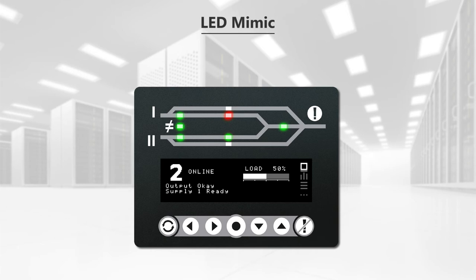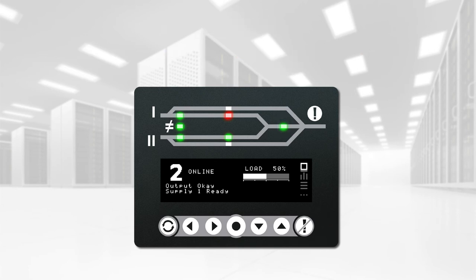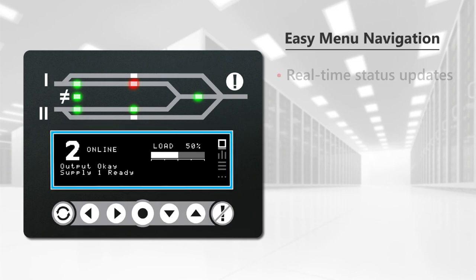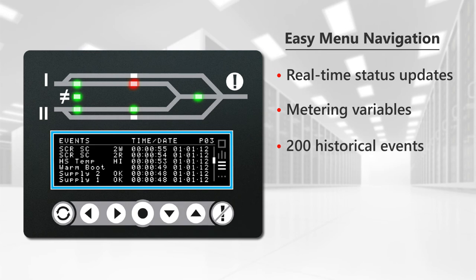The bi-colour LED mimic clearly indicates the status of the incoming sources, active source, maintenance bypass, and load. Navigate easily through the menus on the graphic OLED display to access real-time status updates, real-time status metering variables, 200 historical events, and settings.